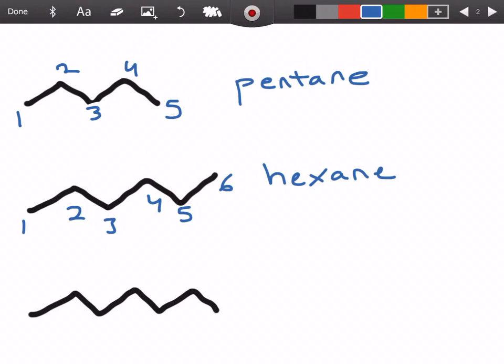Our last straight chain example is going to have one, two, three, four, five, six, seven total carbons, giving us heptane. Hepta being the suffix for seven.